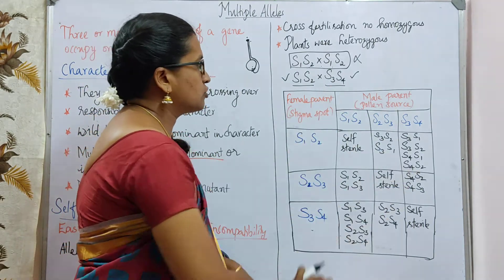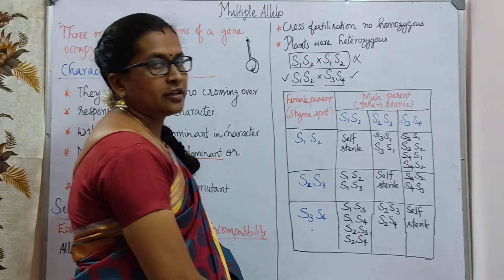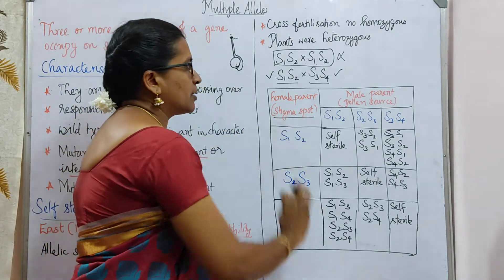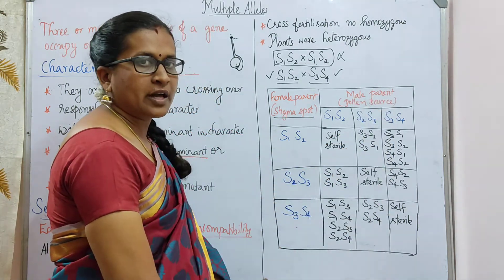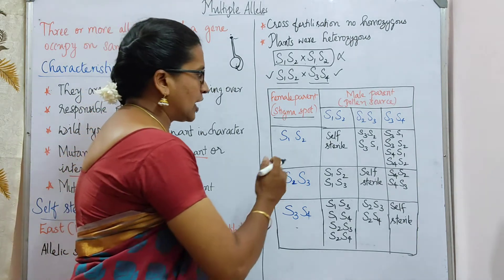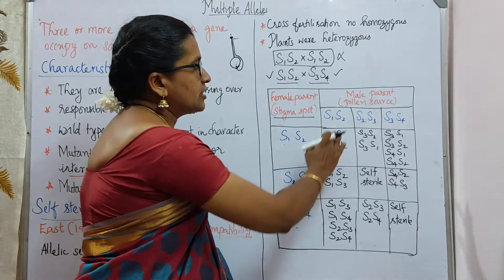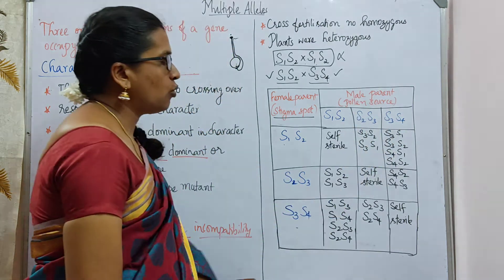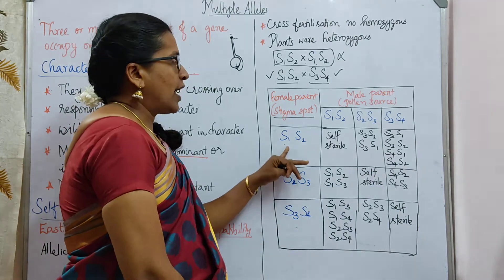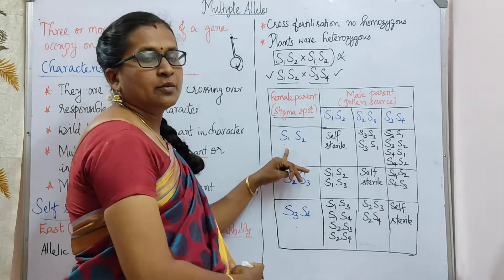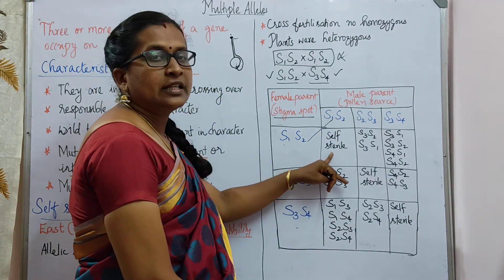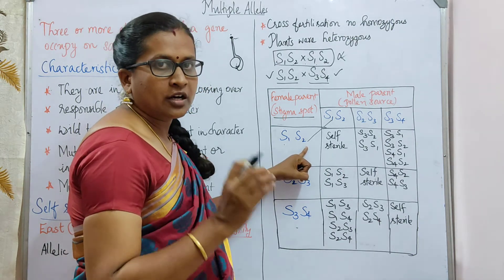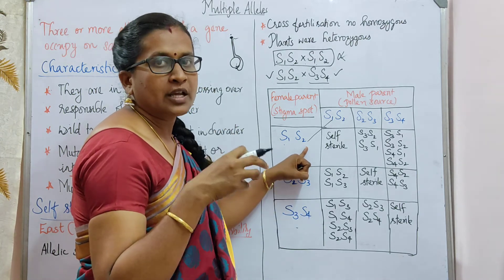Now I will explain using a chart. The female parent represents the stigma spot — because upon reaching the stigma, the pollen gets rejected. The male parent is always the pollen source. According to the allelic forms: female parent S1S2, S2S3, S3S4, and male parent S1S2, S2S3, S3S4. If the cross is the same — for example S1S2 × S1S2 — self-sterility occurs and fertilization does not take place.